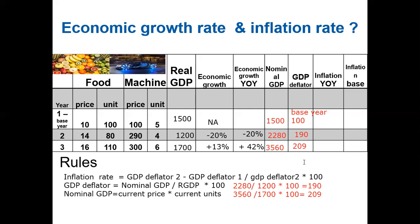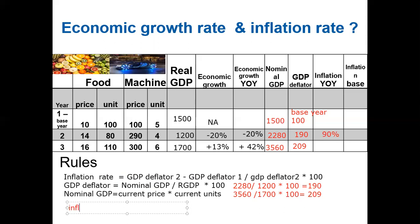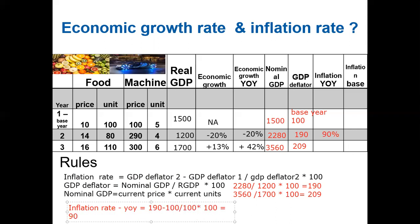For inflation rate, we compare GDP deflators. Inflation rate equals new deflator minus old deflator, divided by old deflator, times 100. Year two inflation (year-to-year): 190 minus 100, divided by 100, times 100 equals 90 percent. Prices increased by 90 percent in year two.